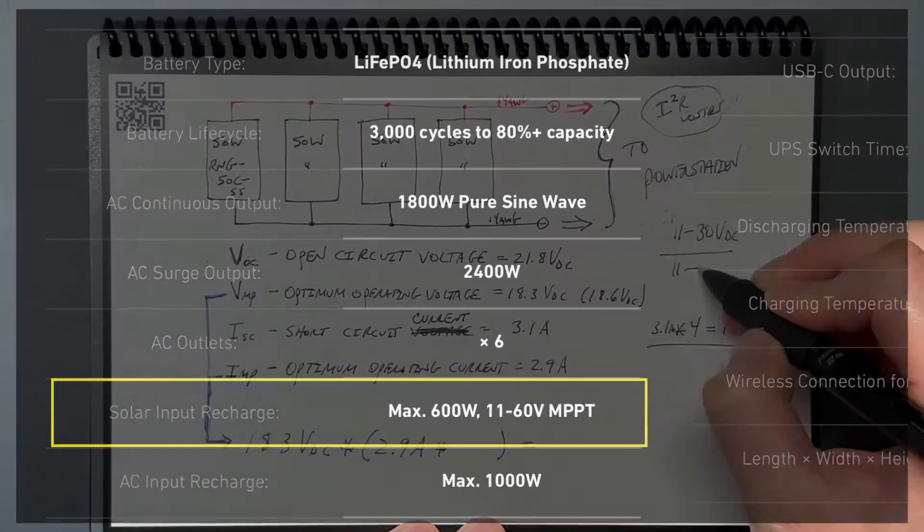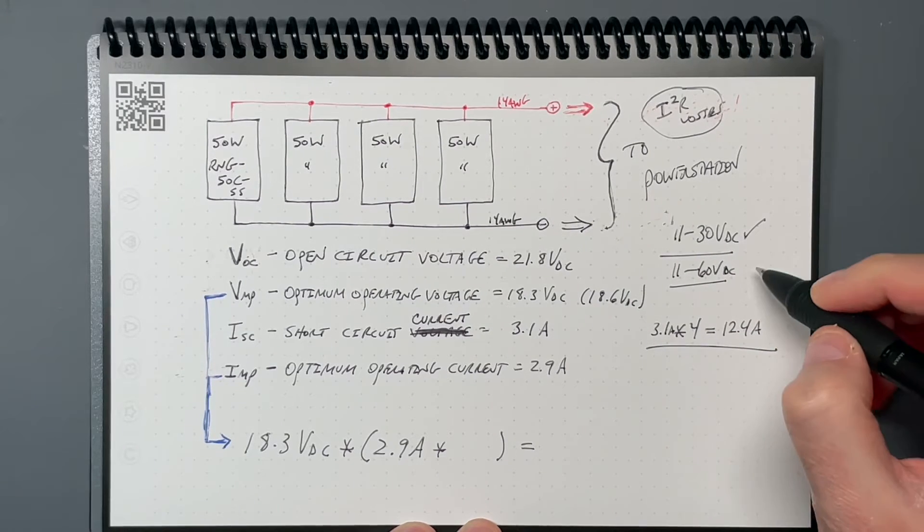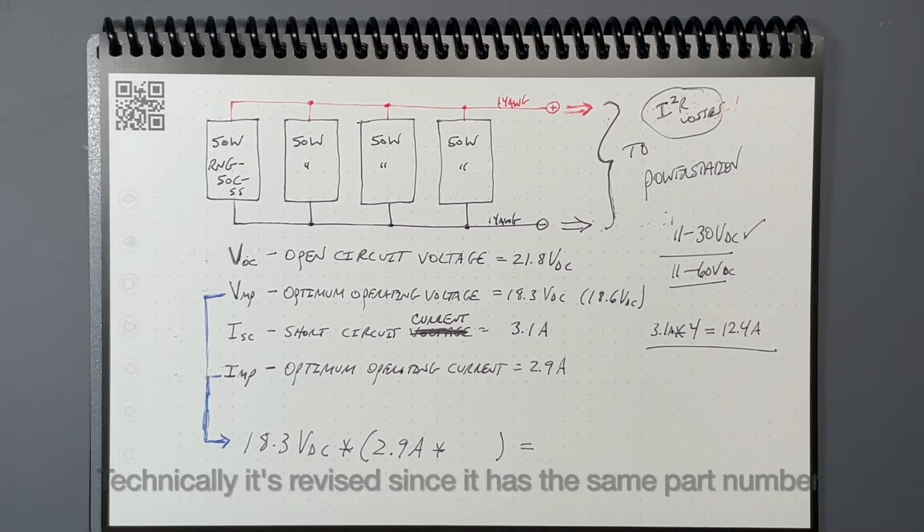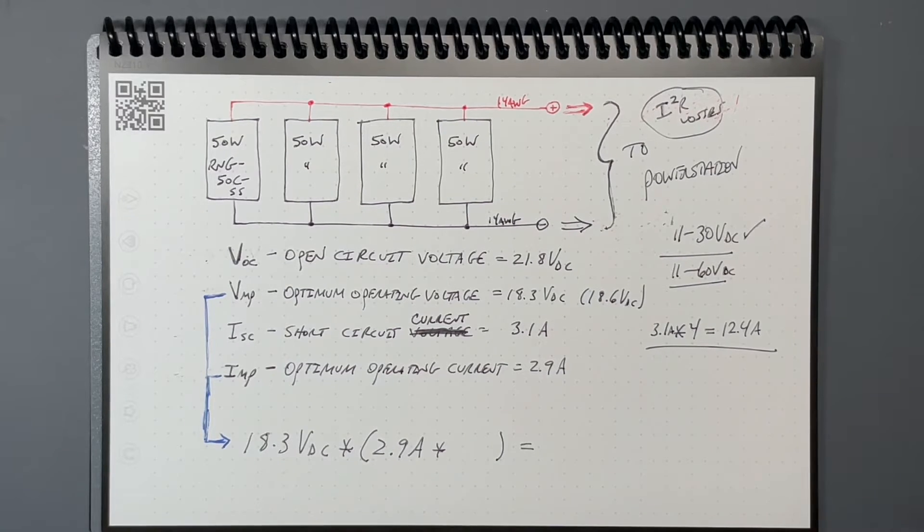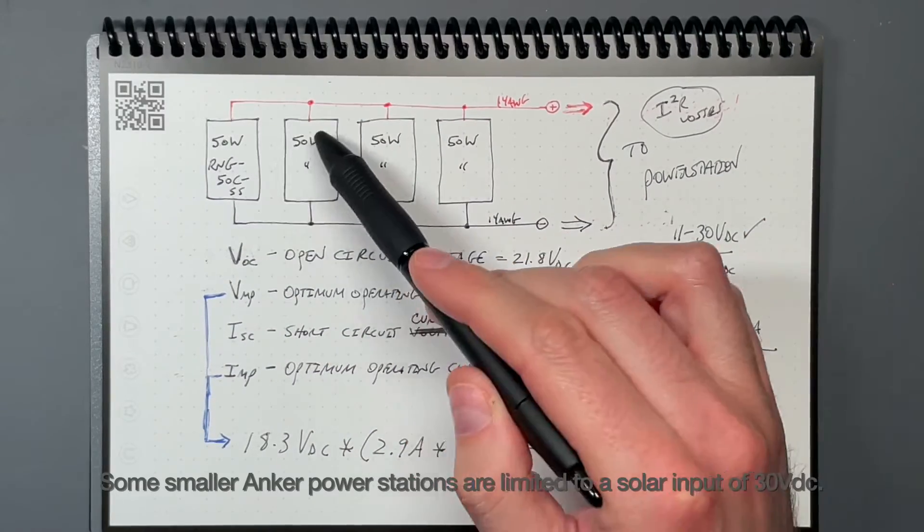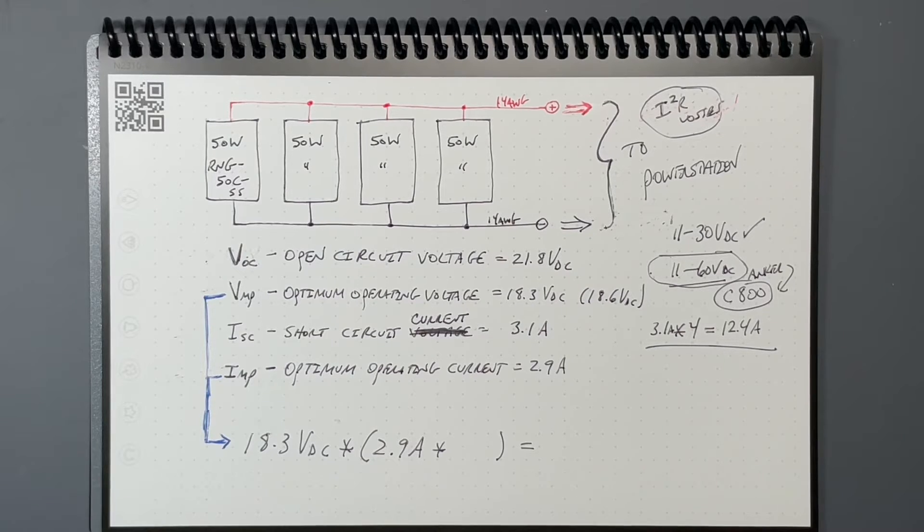Now I just double-checked myself, fact-checked myself on the Anker website, and it's now showing that the Anker Solex F1200 portable power station actually has an input voltage range of 11 to 60 volts DC. This is the one I have, and this is the new one, which is the thing that kind of frustrates me about Anker is that they seem to keep changing, moving the goalposts.